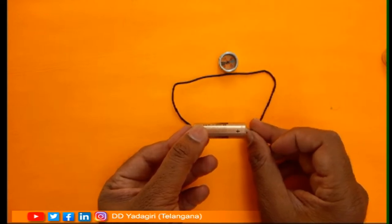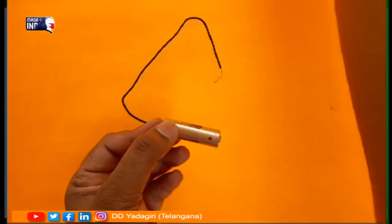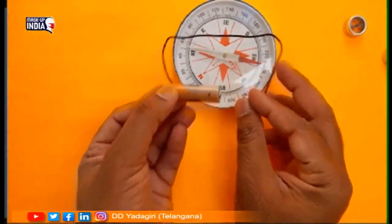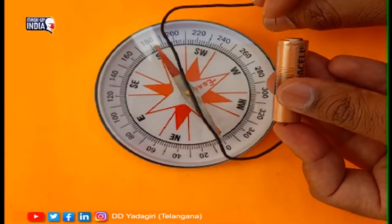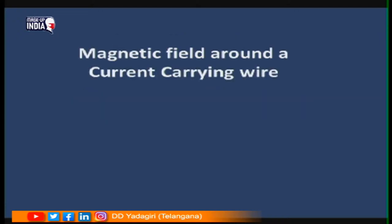In this activity, you can observe that when current flows in the wire, the direction of the compass changes and the compass needle gets deflected. Orsted observed that a current-carrying conductor produces a magnetic field, and it is because of this magnetic field that the compass direction changes. So a current-carrying wire has a magnetic field around it — this is the conclusion from Orsted's experiment.